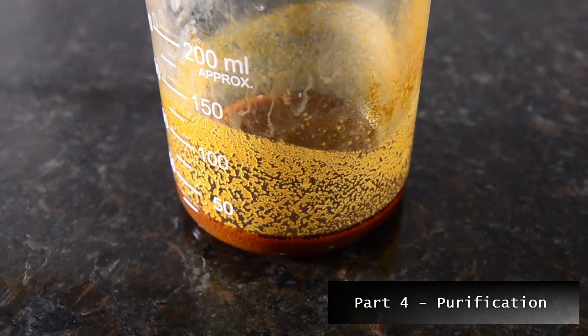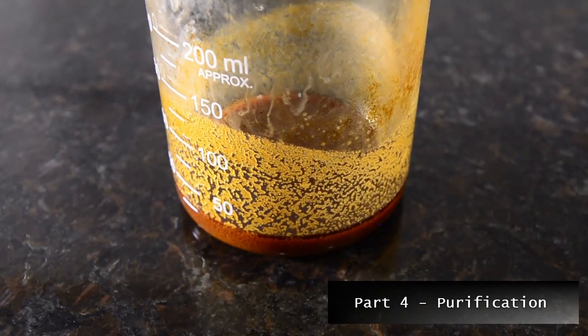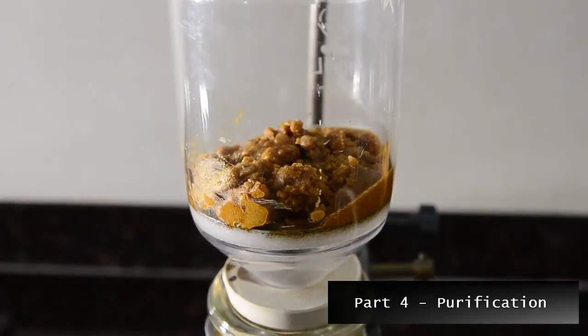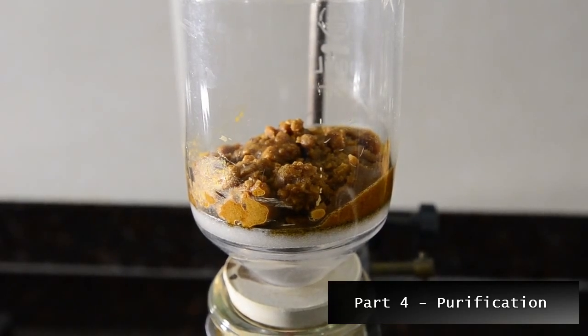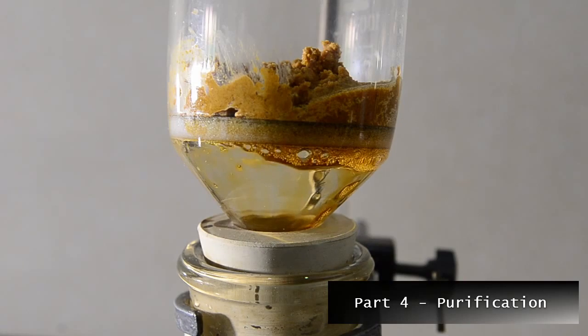Chill the mixture down to form a thick slurry of crystals. Place these into a filter funnel and then use vacuum to get as much of the orange liquid off as possible.